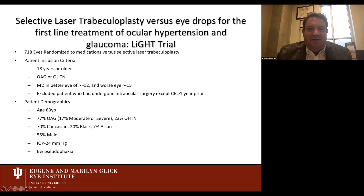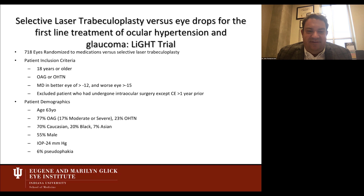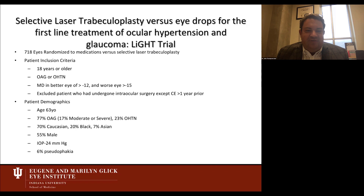The next study is the LIGHT trial — selective laser trabeculoplasty versus eye drops for first-line treatment of ocular hypertension and glaucoma, based in Europe. It was 718 eyes randomized to medications versus SLT. Patients included those 18 or older with open-angle glaucoma or ocular hypertension, a mean deviation of less than -12 dB, so mild to moderate glaucoma. The average patient was 63, with 70% Caucasian, 20% of African descent, 7% Asian, average IOP of 24.